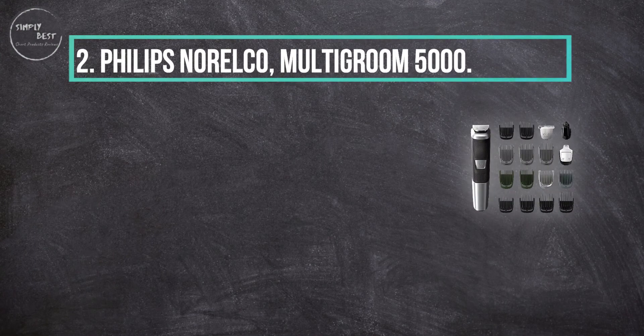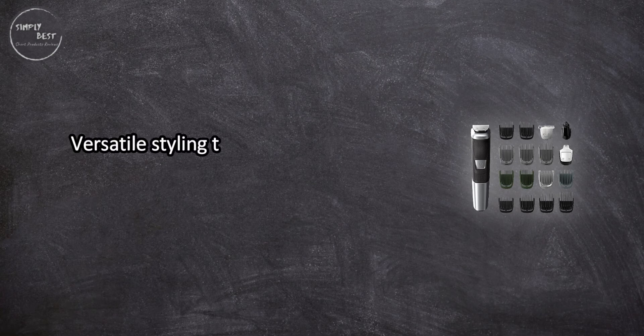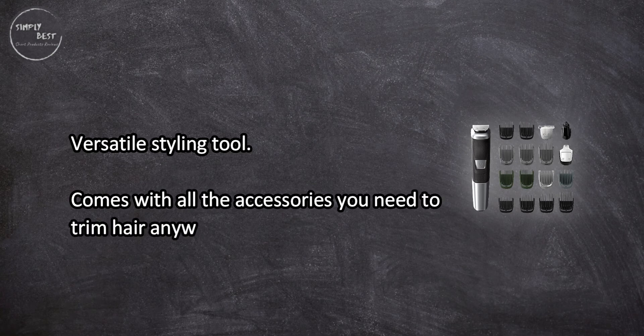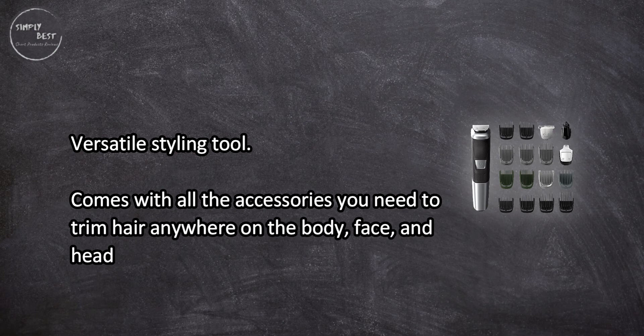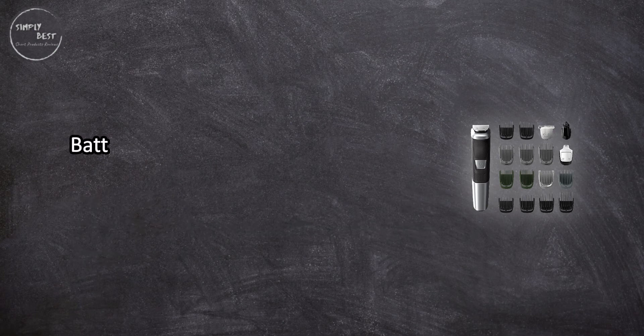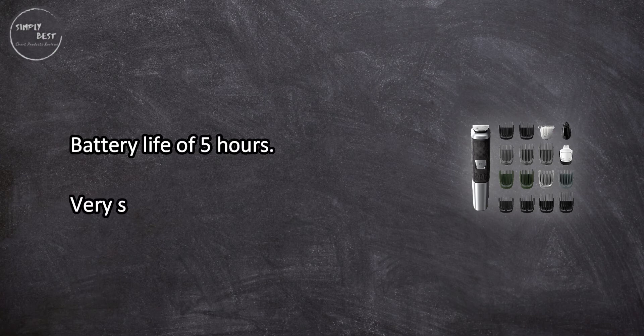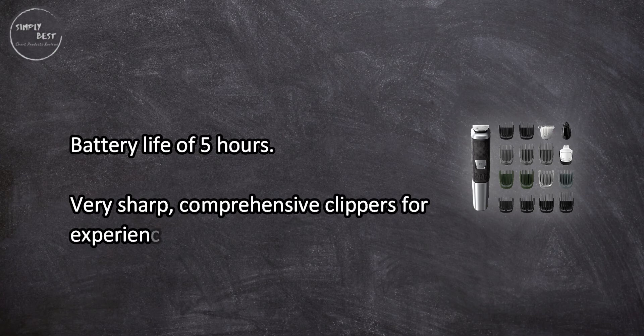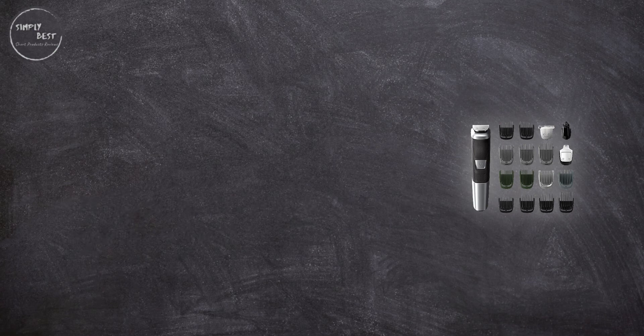At number two, Philips Norelco Multigroom 5000. Versatile styling tool comes with all the accessories you need to trim hair anywhere on the body, face, and head. Battery life of five hours, very sharp. Comprehensive clippers for experienced users, head attachments are not adjustable.